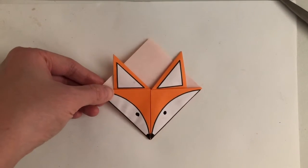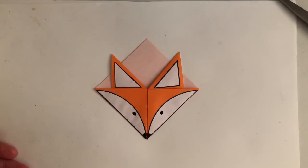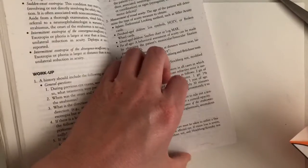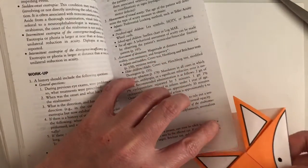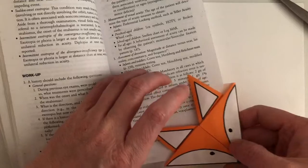Today let's make a corner bookmark that looks like a fox. If you're reading in a book and you need to mark the place where you last stopped, you can just take your corner bookmark and slip it on the lower corner of the page.